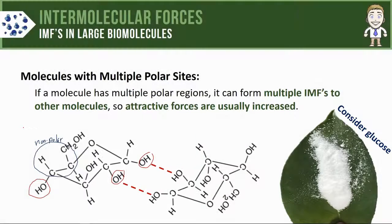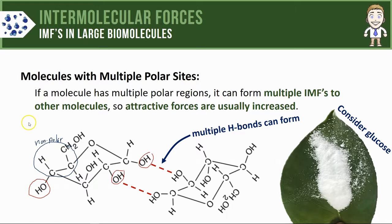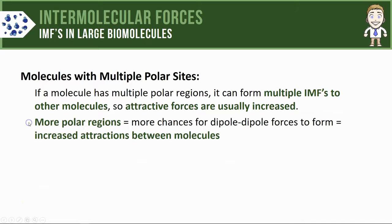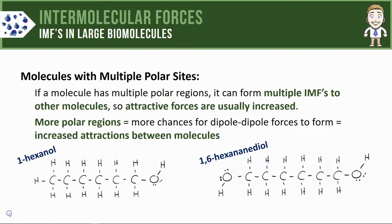Since there are multiple polar regions, there are multiple places where those polar regions can line up with polar regions on other molecules. Because both molecules meet the qualifications for hydrogen bonding, not just one hydrogen bond forms between these two glucose molecules — but two. We can summarize this by saying the more polar regions a molecule has, the more chances there are for dipole-dipole forces to form, increasing attractions between molecules.